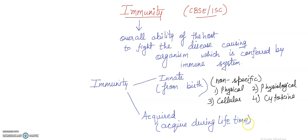Acquired immunity is pathogen-specific and is characterized by memory. When our body encounters a pathogen for the first time, it produces a response called the primary response, but it will be of low intensity.